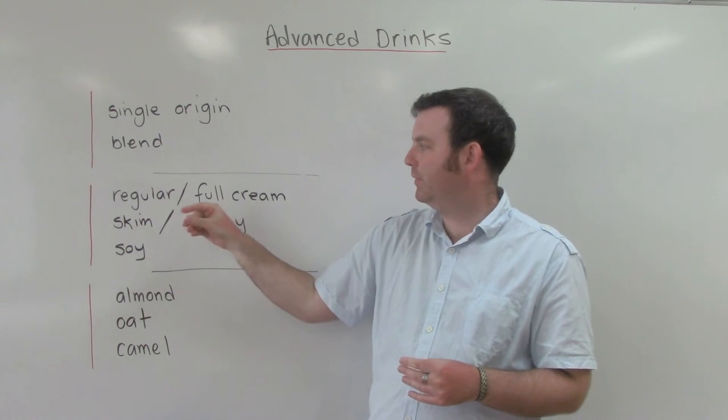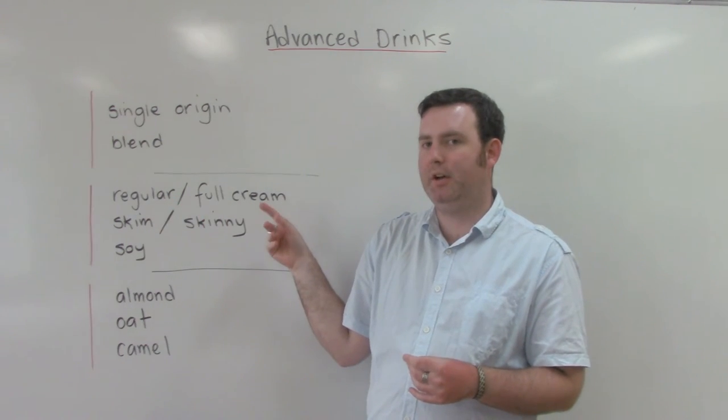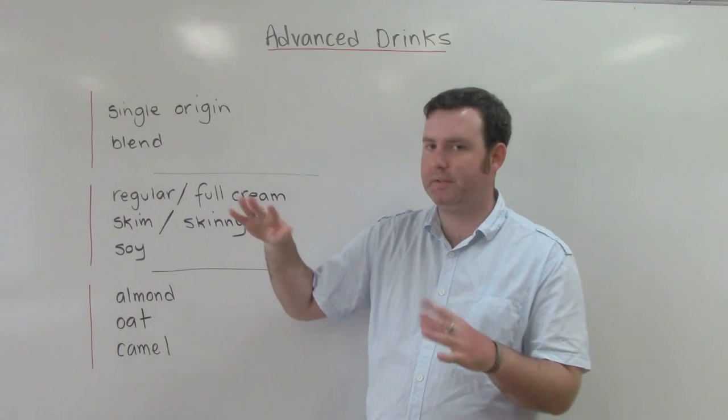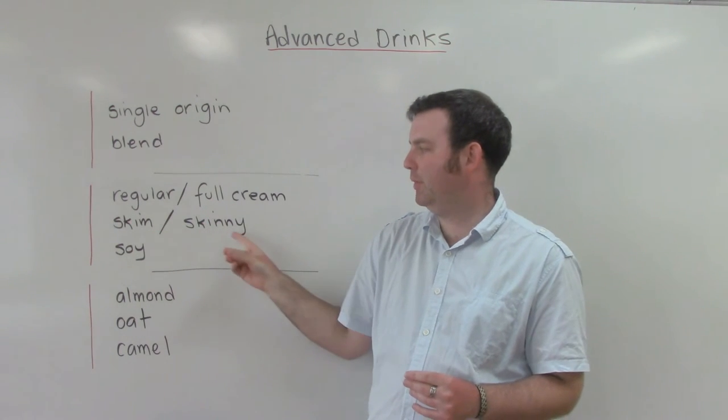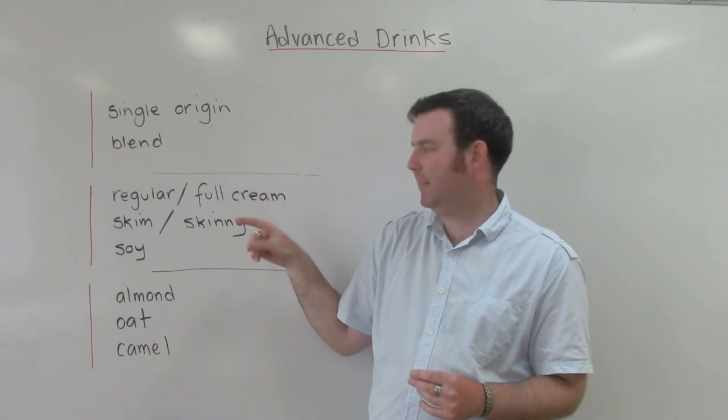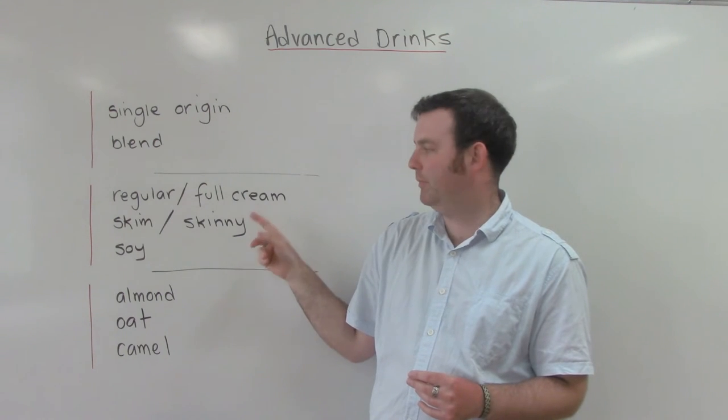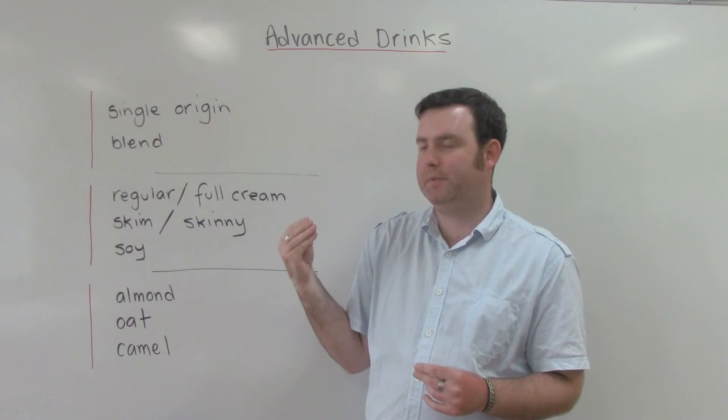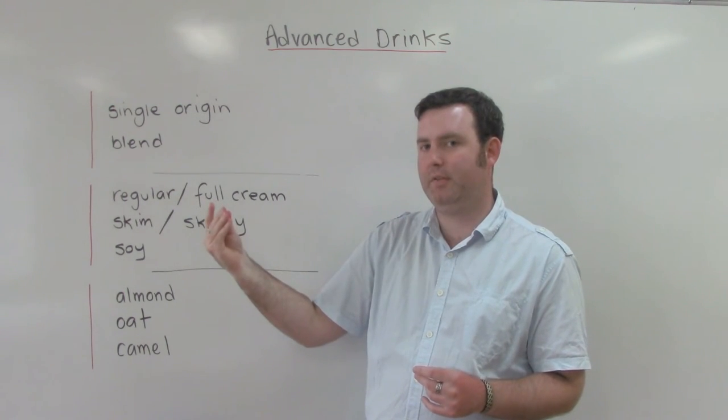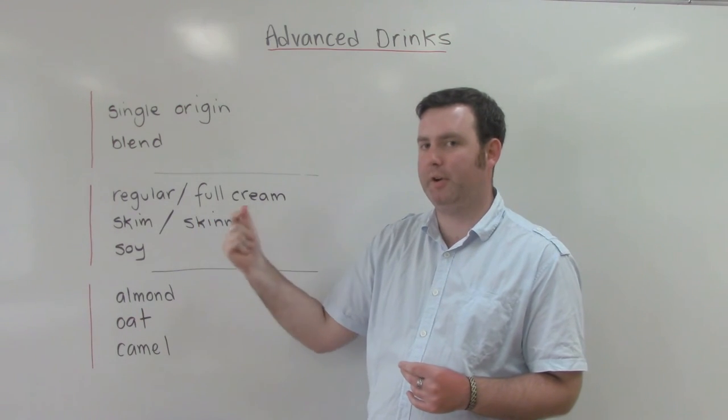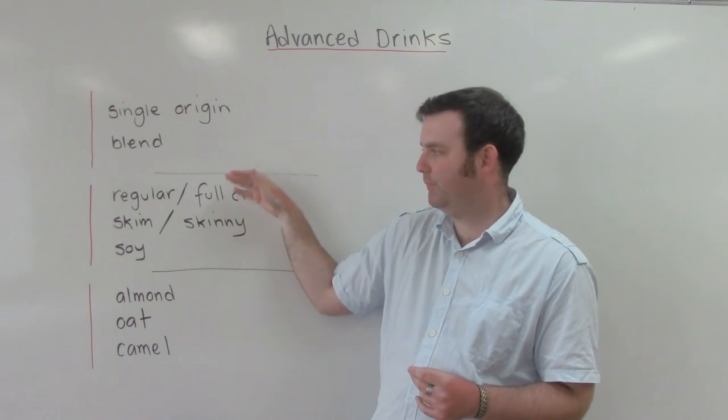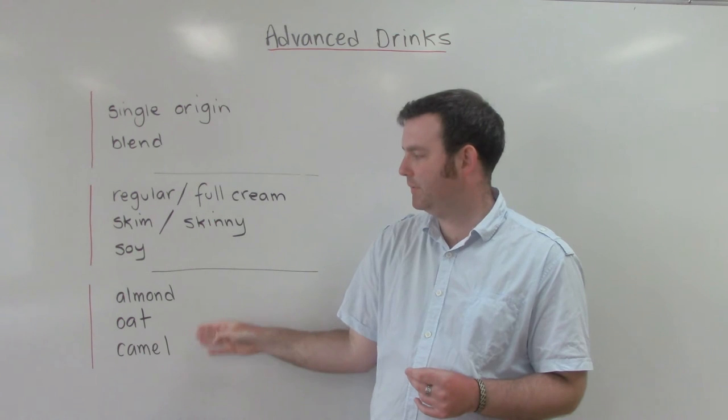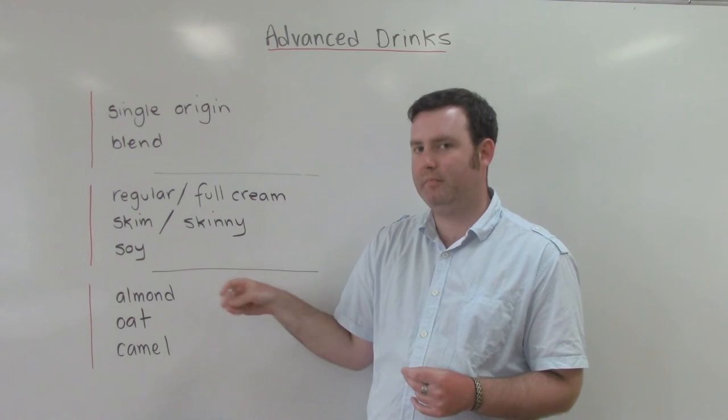Now, milk. Starting with regular full cream milk. This milk is what you get normally in coffee at a cafe, unless you ask for anything different. The next one, skin or skinny milk, has less fat than full cream. And the next one, soy milk, is from the soybean. So this milk is what vegans usually have, because it's not from an animal product. So these are the normal, regular types of milk in the cafe.